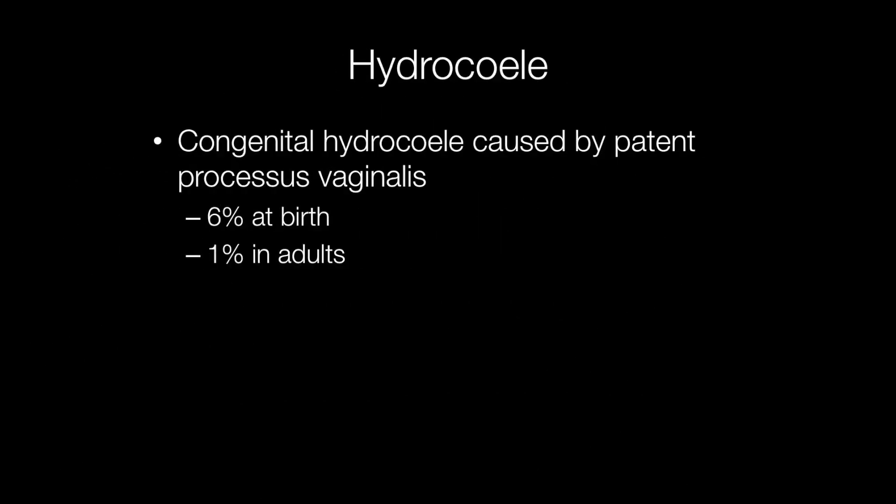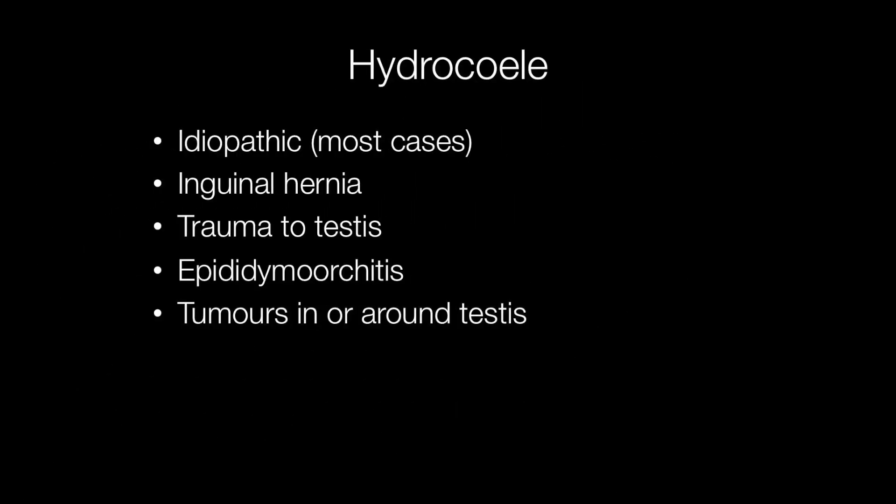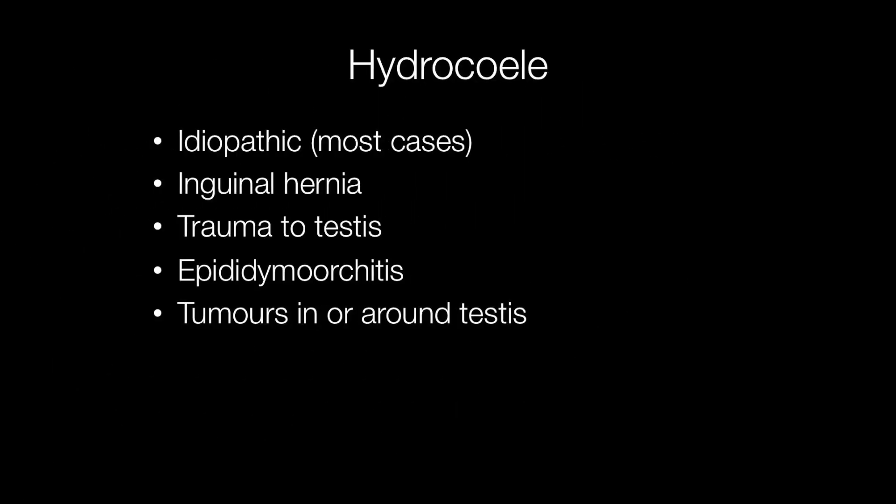At birth, approximately 6% of hydroceles are congenital, due to a patent processus vaginalis, whereas in adults only 1% of hydroceles are congenital. The majority of hydroceles are idiopathic, where there is no known cause.